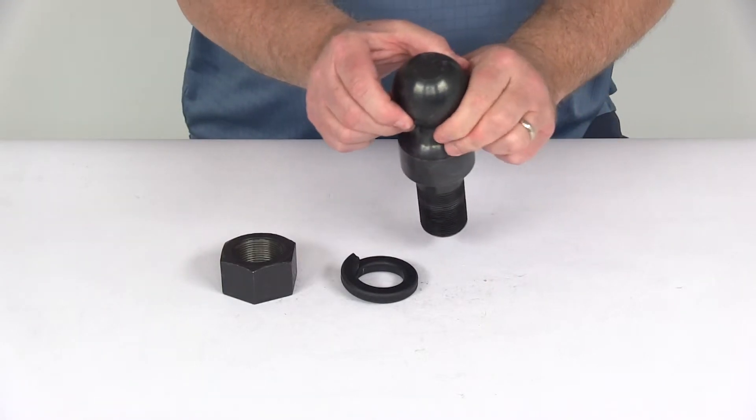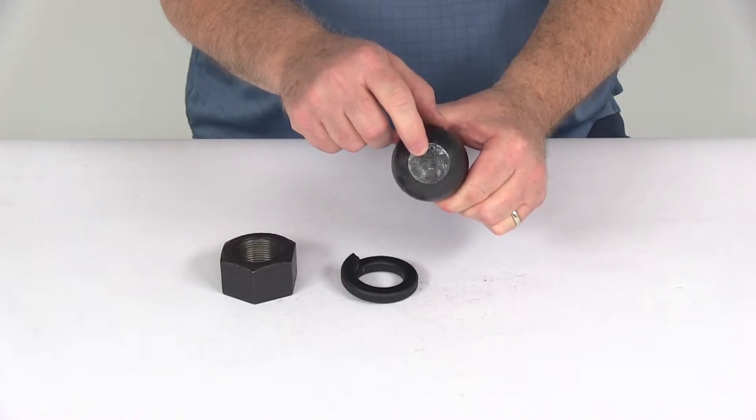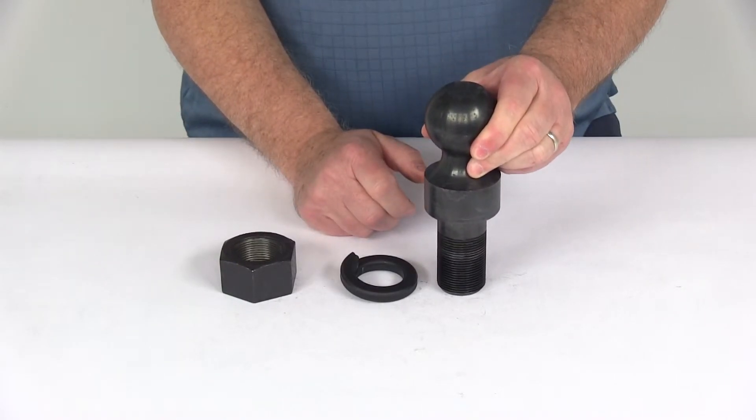The ball diameter is 2-5-16ths, which is stamped on the top of the ball. The weight capacity of 30,000 pounds is also stamped on top.